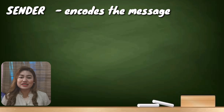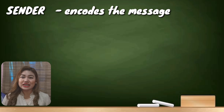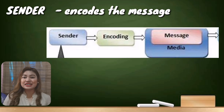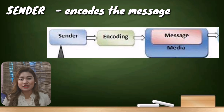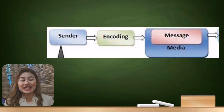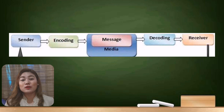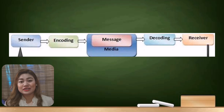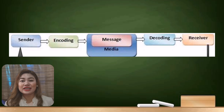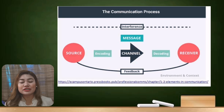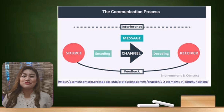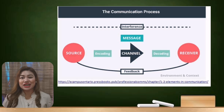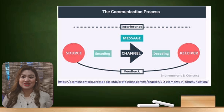The sender encodes the message by putting it into words and expresses the ideas into proper sequence. This message is accepted, interpreted, or decoded by the receiver. The receiver, on the other hand, may or may not respond to the sender. If the receiver chooses to respond, then the first sender becomes the receiver of the message.